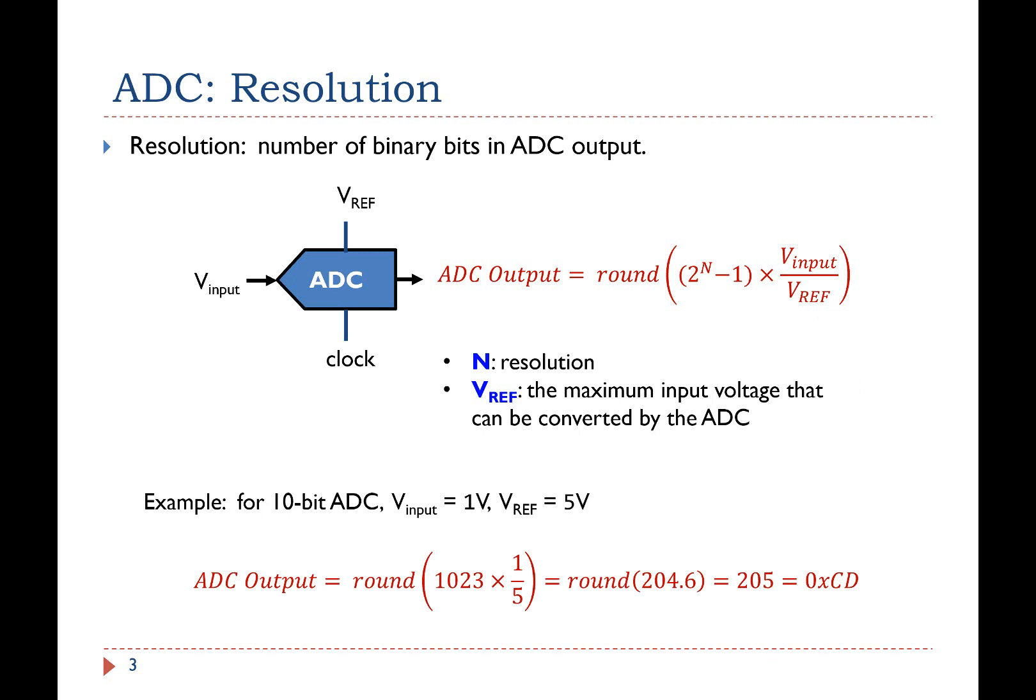For example, for 10-bit ADC, if the input voltage is 1V and the reference voltage is 5V, then the ADC output is 205 in decimal, or CD in hex.